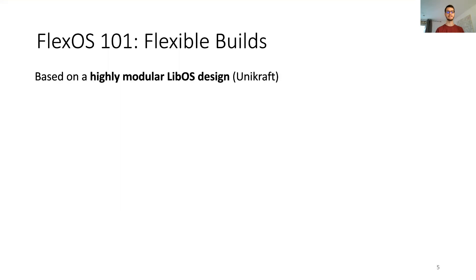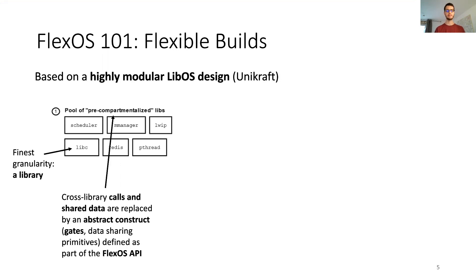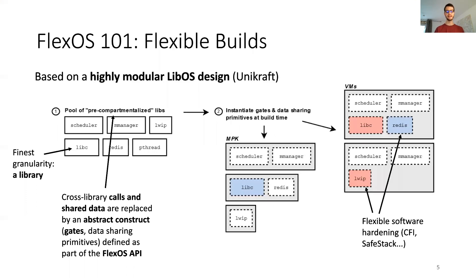In order to achieve this, we propose a design based on a highly modular LibOS Unicraft. All kernel and userland components are developed as standalone libraries. As part of a porting phase, we pre-compartmentalize them. This means that cross-library calls and shared data are replaced by an abstract construct. We call them gates and data sharing primitives, and we define them as part of the FlexOS API. At build time, these placeholders are instantiated with a particular mechanism — it can be a function call if you put the two components together, but also MPK domain switches or VM RPCs if you want to go further.